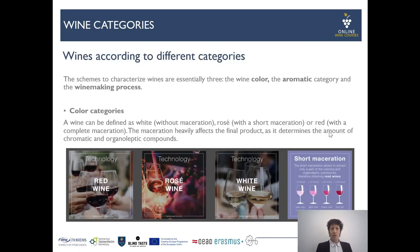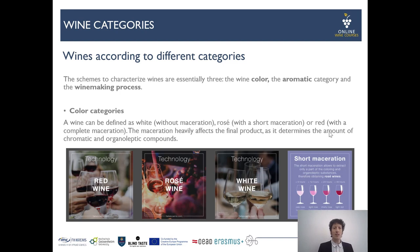How do we categorize wine? The schemes are essentially three: wine color, aromatic category, and the winemaking process. For color categories: a white wine is made without maceration, a rosé with a short or limited maceration, and a red wine with a more complete maceration. Maceration heavily affects the final product as it determines the amount of chromatographic and organoleptic compounds — what you see in the glass and what you perceive while tasting.